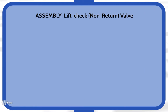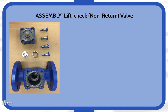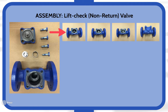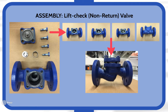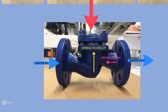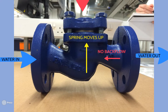The lift check, or non-return valve, operates on a spring basis and the use of the pressure exerted by the water. The valve is assembled by firstly adding the spring and a circular piece into the bottom half of the valve, then adding the top half and screwing it in. As we can see, the water enters through here and when with enough pressure it will force the spring upwards, allowing the water to flow in the forward direction. The water cannot flow in the other direction as the spring part would block off the passage.